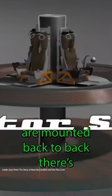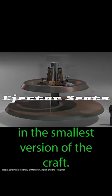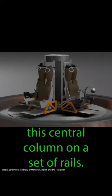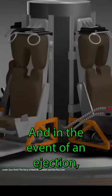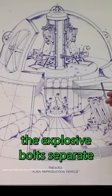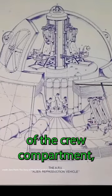The ejection seats are mounted back to back. There's four of them in the smallest version of the craft and they're mounted on this central column on a set of rails. In the event of an ejection, the explosive bolts separate the top and bottom halves of the crew compartment.